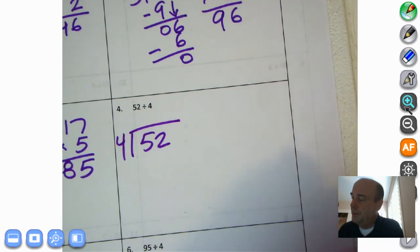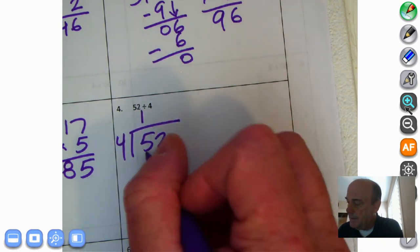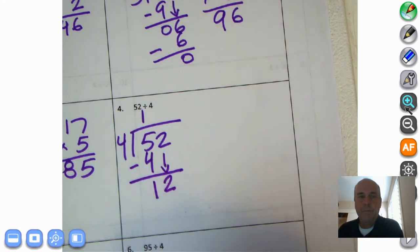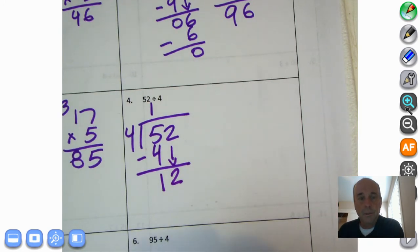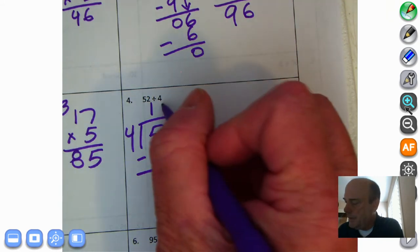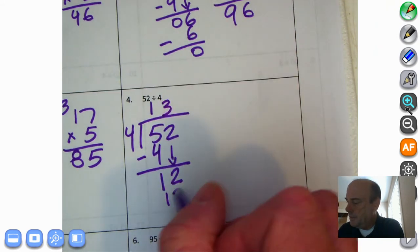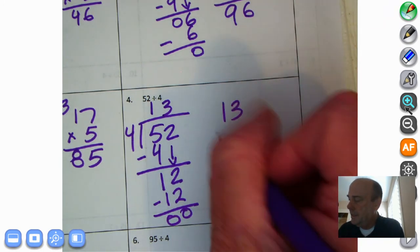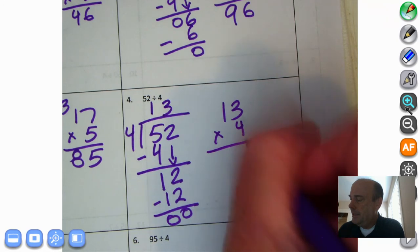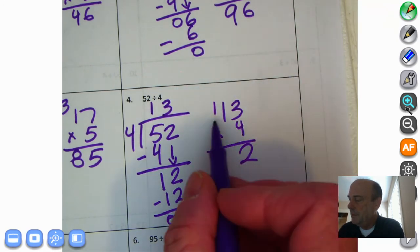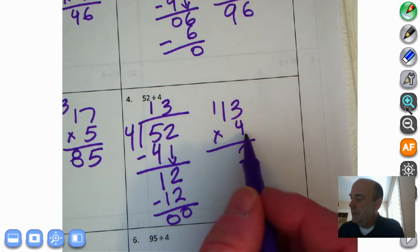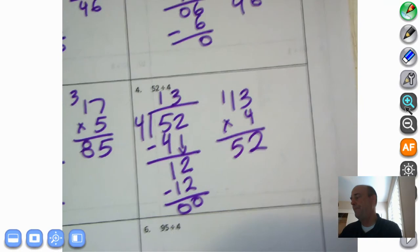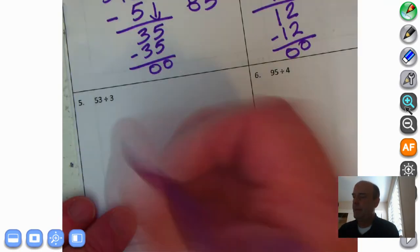52 divided by 4. 4 times 1 is 4. It's going to be 4 times 1, right? Time to subtract. 5 minus 4 is 1. Bring down the 2. 4 times 3 is 12. So the 3 there, now 12 down there. And we subtract and we get nothing. Time to check using multiplication. 13 times 4. 3 times 4 is 12. 10 times 4 is 40. Plus that 10 makes it 50. And we are absolutely correct. 52.